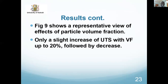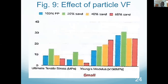We also looked at the effect of particle volume fraction on strength. We see only a slight increase in UTS with volume fraction up to 20%, followed by a decrease. The graph shows variation of strength with particle volume fraction — a slight increase from pure PP matrix to 20%, but after that there is a decrease, and if we increase the volume fraction further, the decrease is more pronounced. That is the general trend.